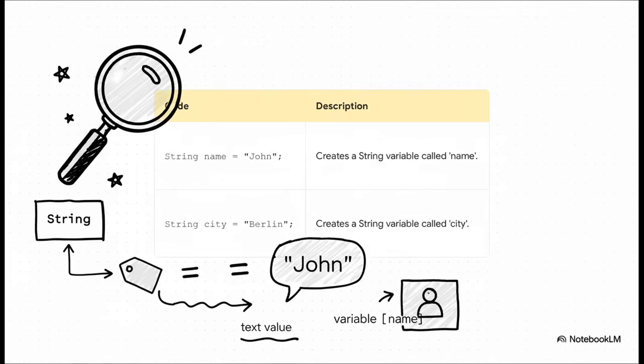Let's break this down, because it's actually way simpler than it looks. First, we say what type of container we want. In this case, string. Then, we give that container a label like name or city. Finally, we use the equal sign to put our text inside it. And just like that, the word John is now tucked away inside our name variable.